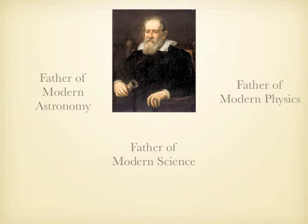Most beliefs then were based on philosophy or religion, but he used experimental evidence to prove if something was true. He relied on accurate readings from instruments and did not make up or imagine the data in order to prove a theory. This is how the scientific method started, and it is what we still use today to come up with various scientific theories.